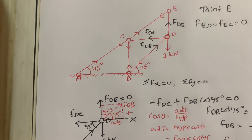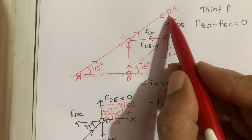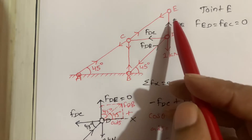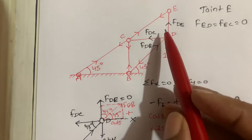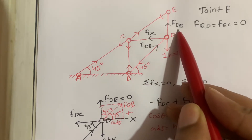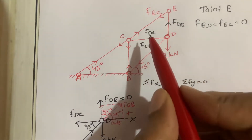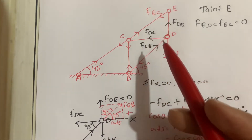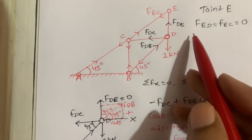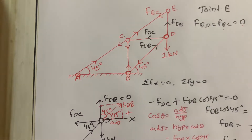By using the method of joints I am going to calculate each joint. First, consider joint E. Joint E is in equilibrium under two forces: FED and FEC. These two forces are non-collinear, hence they must both be zero. So FED equal to FEC equal to zero for joint E.